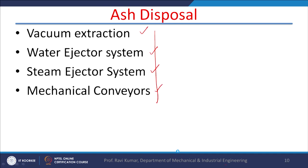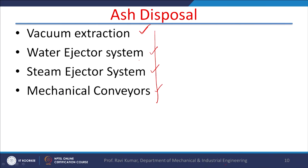Regarding ash disposal methods: vacuum extraction is done through vacuum but it consumes high energy. In the water ejector system, the principle is that high velocity fluid flows over a surface, creating low pressure due to the Bernoulli effect, which causes movement of the fluid or solid from the bottom upward. The working fluid can be water or steam.